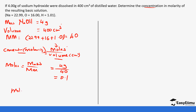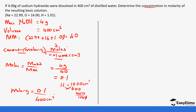Now we have the moles. Going back to the formula: molarity equals moles, which is 0.1, over volume, which is 400 cm³. Remember the conversion — 1 litre equals 1000 cm³ — so 400 cm³ divided by 1000 gives 0.4 litres. So molarity equals 0.1 divided by 0.4, which gives us 0.25 M.